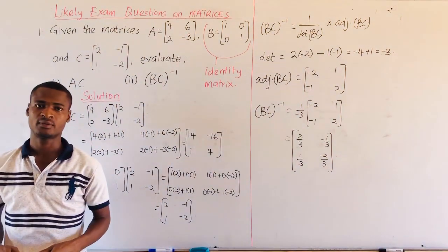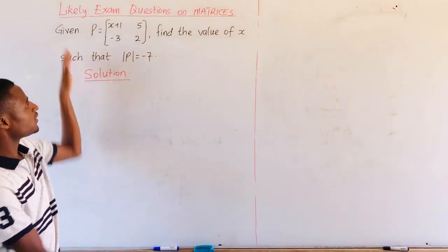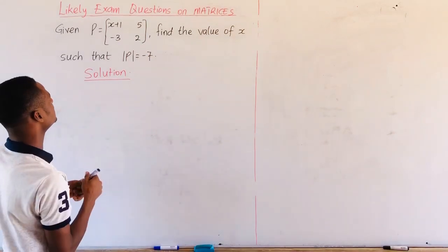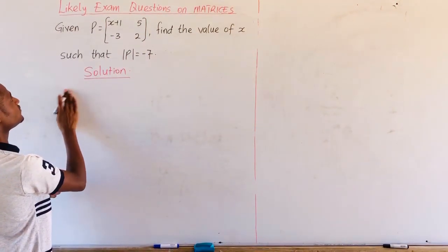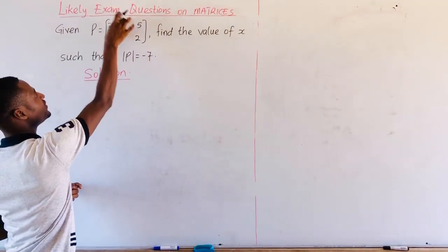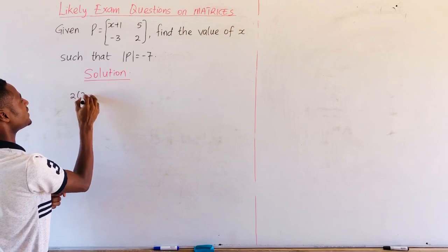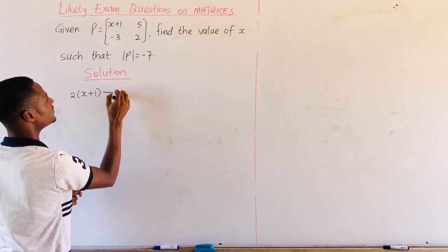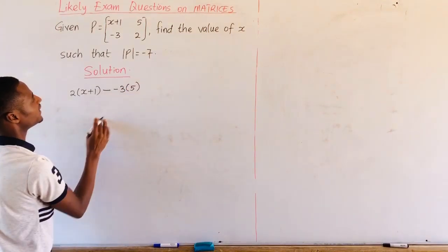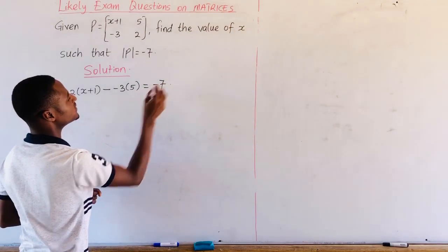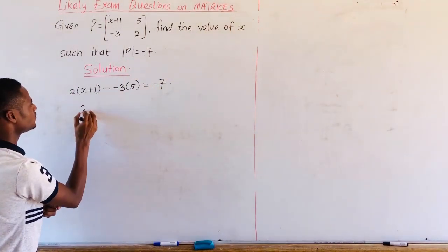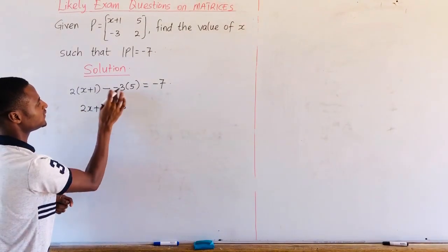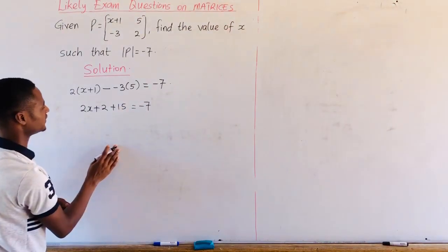Let's take our second example. We are going to find the value of x such that the determinant of the given matrix is equal to negative 7. The determinant is the product of the leading diagonal, which is 2 times (x plus 1), minus the product of the minor diagonal, which is negative 3 times 5. The determinant is equal to negative 7. So we have 2x plus 2, then plus 15, equals negative 7.